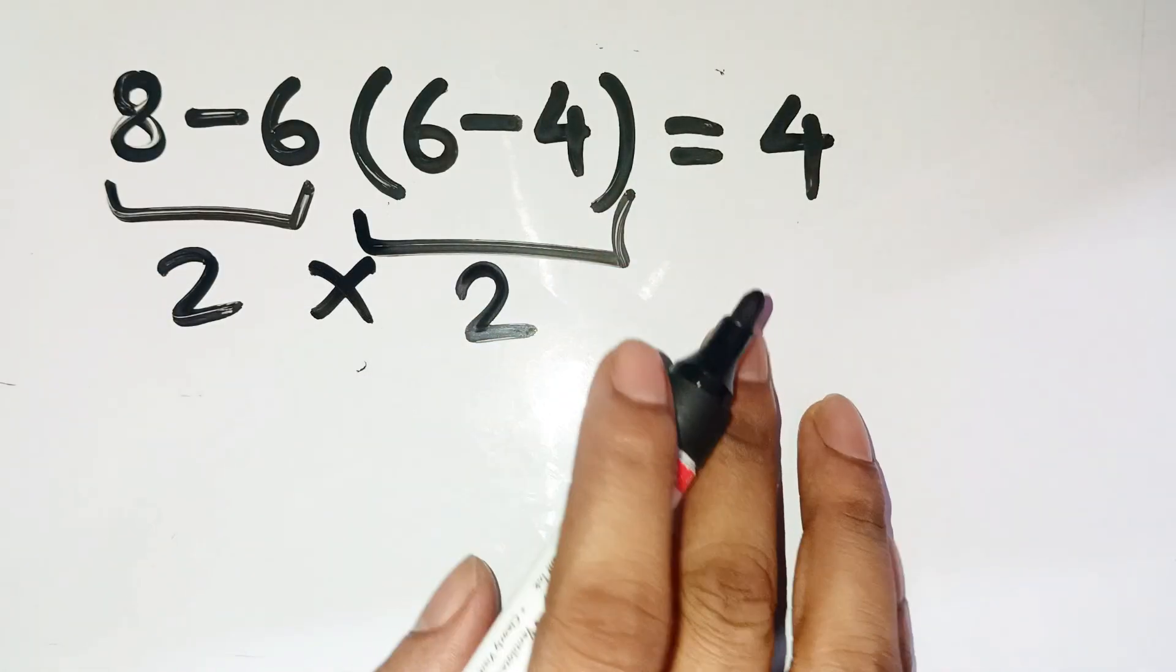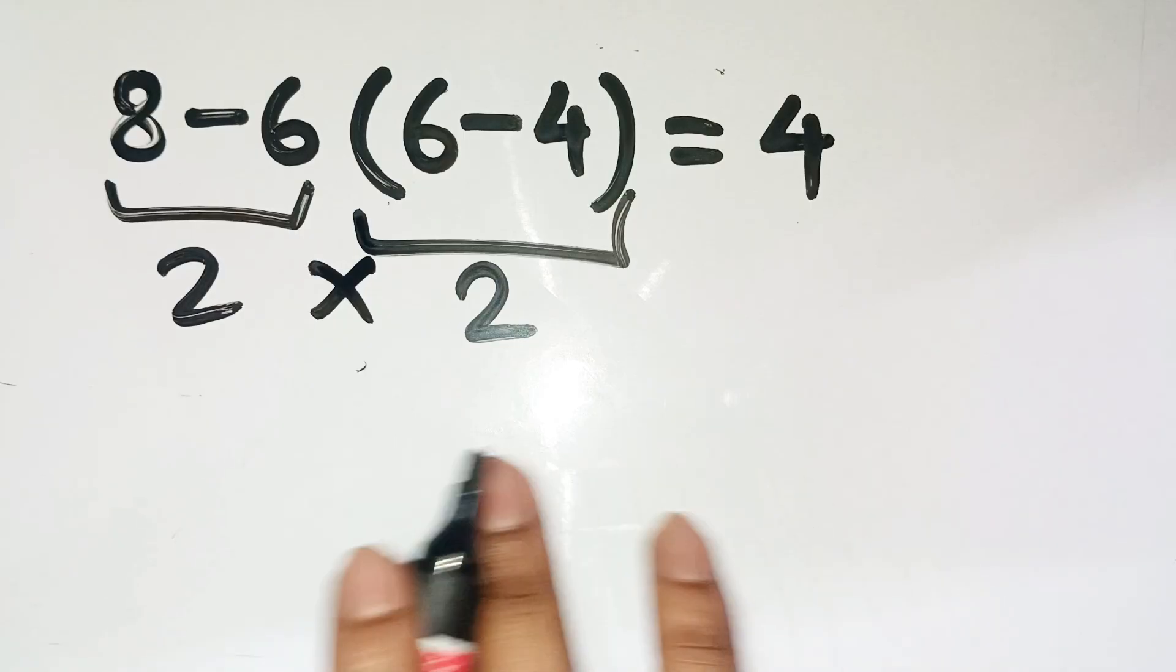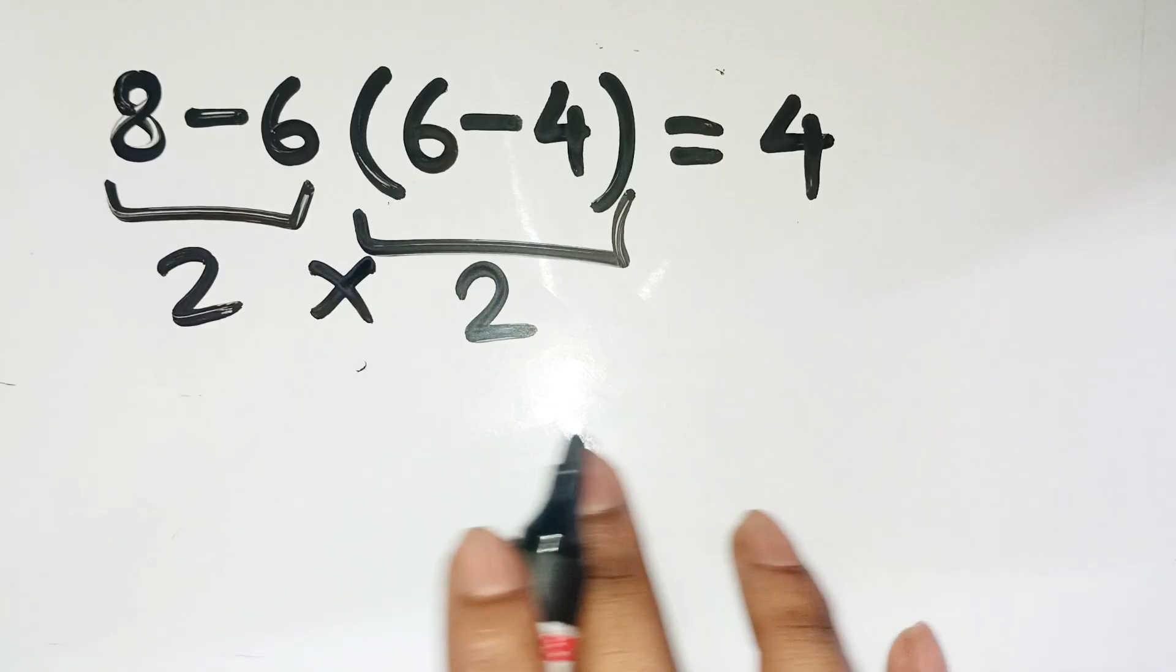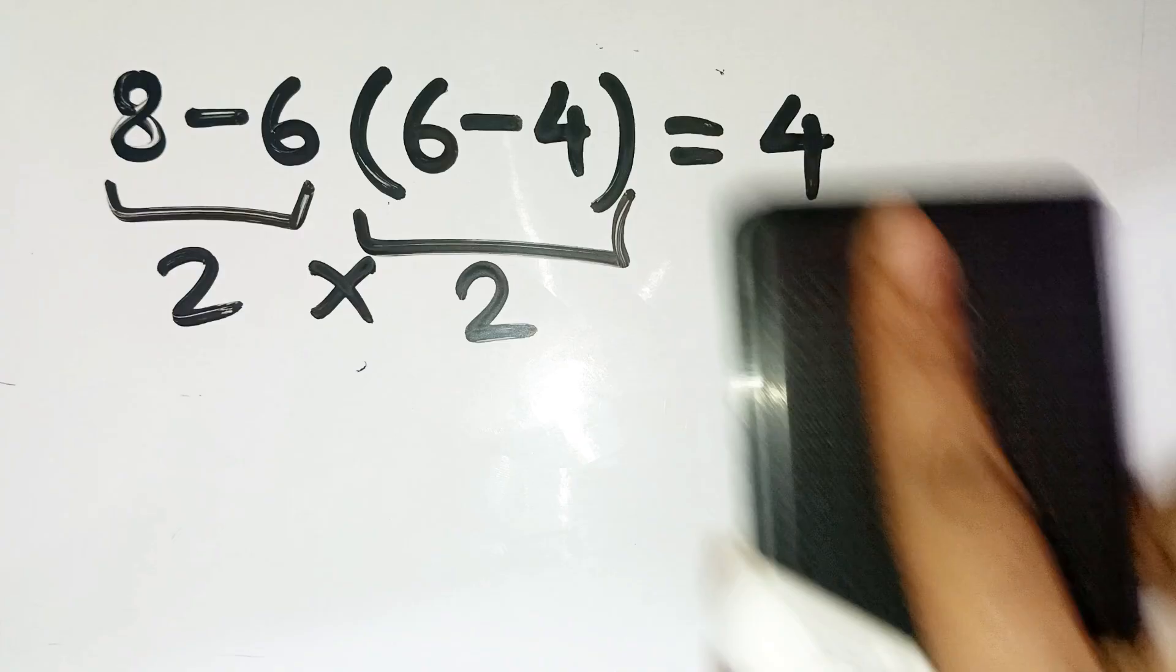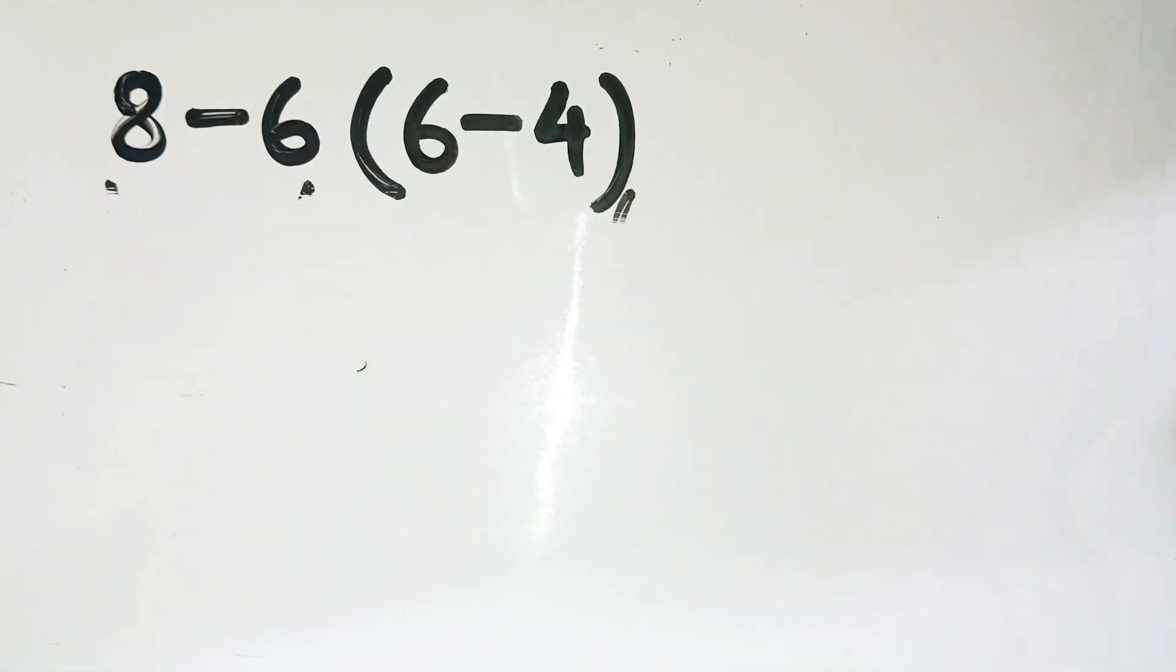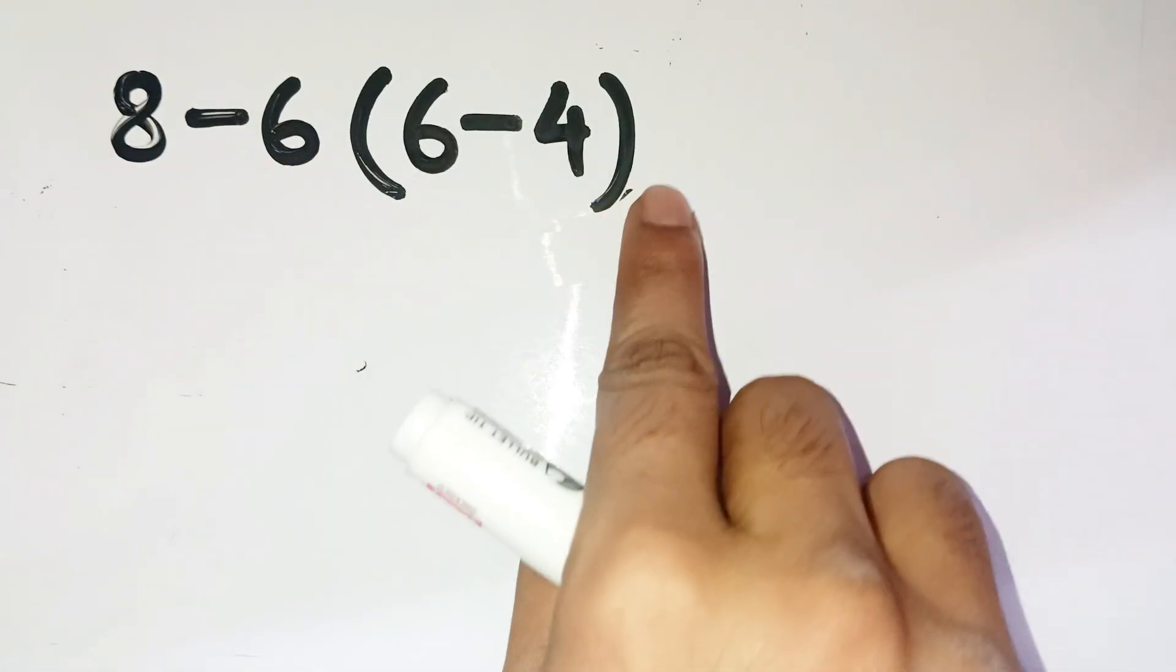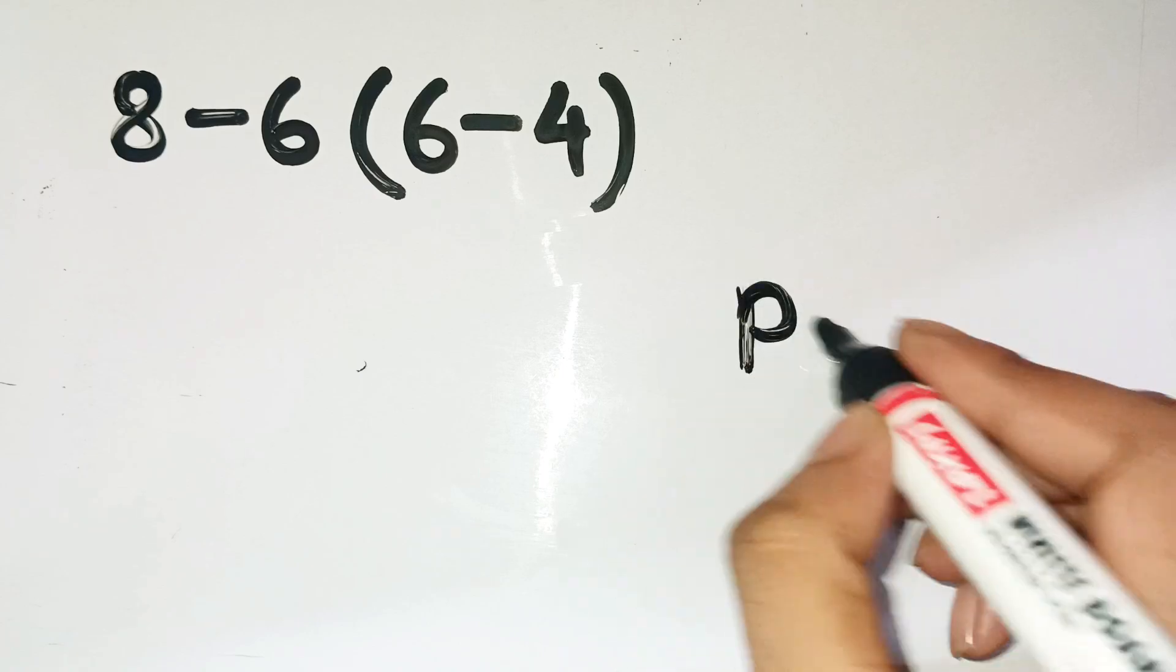Feels satisfying, doesn't it? But that's exactly where the trap is. This little problem, eight minus six times parentheses six minus four, looks innocent, but the order of operations flips the whole outcome. Let's slow it down and see what's really happening.